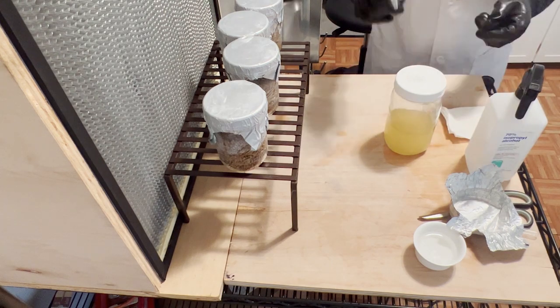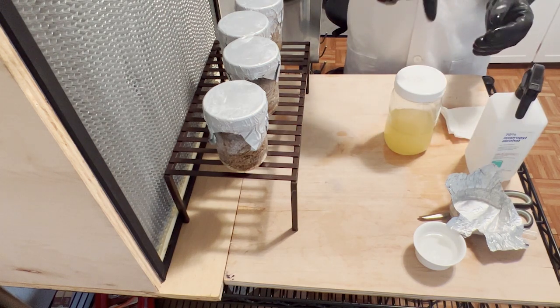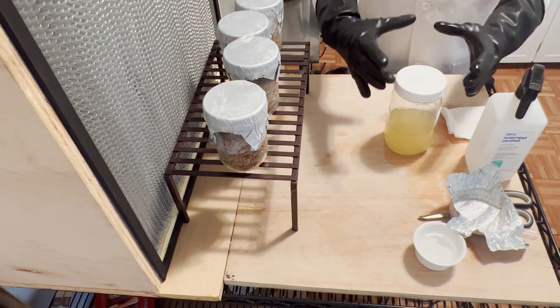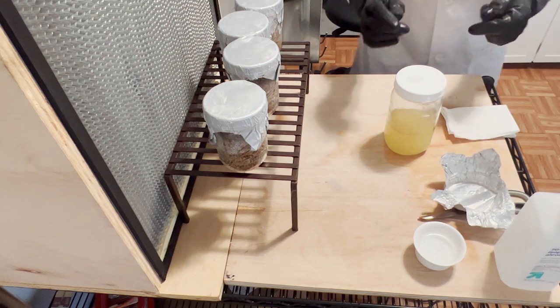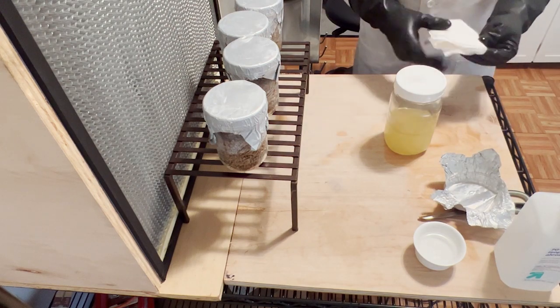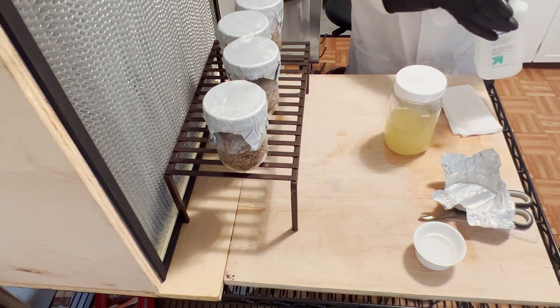I put some polyfill in there that stops any contaminants from being able to fall down inside. Then I put the tin foil on top just as another secure layer to make sure I protect the mycelium inside this liquid culture.